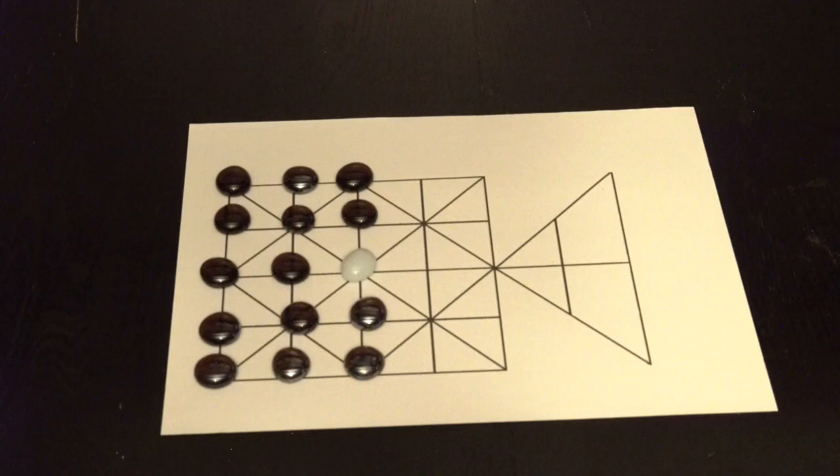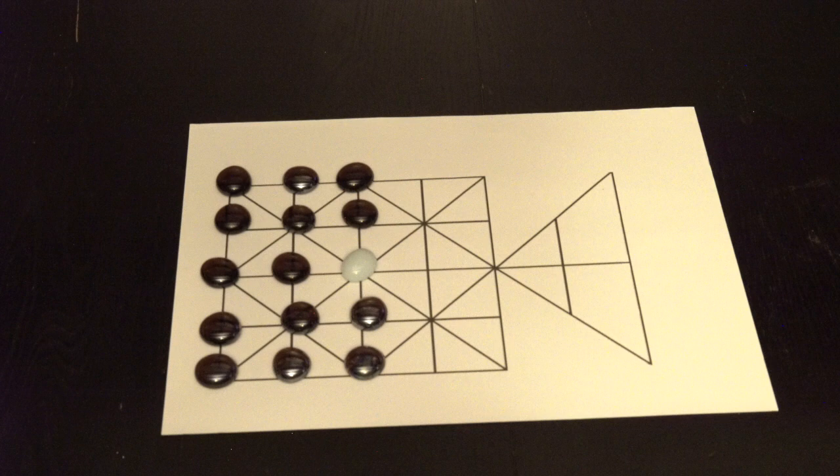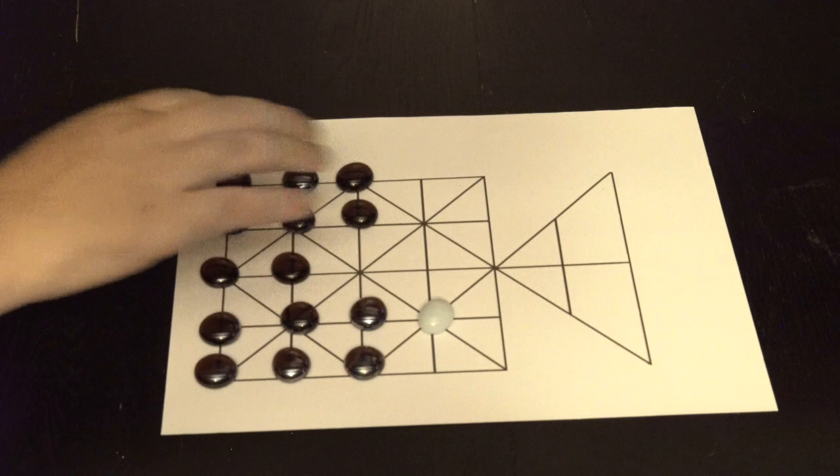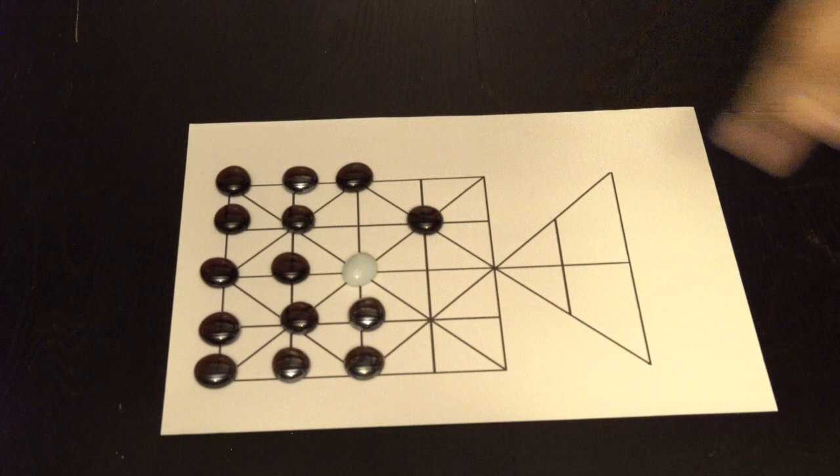For Adugo, the tiger moves first. To win, the tiger must eat five dogs, or the dogs must stalemate the tiger. Para ganar, el tigre necesita comer cinco perros, o los perros tienen que estancar al tigre.